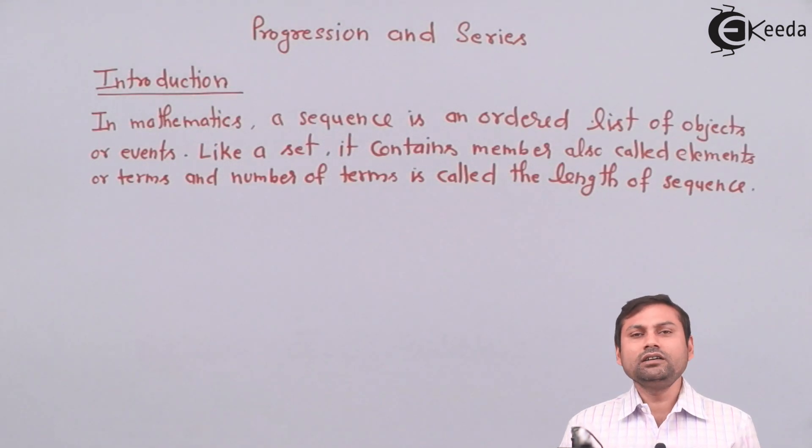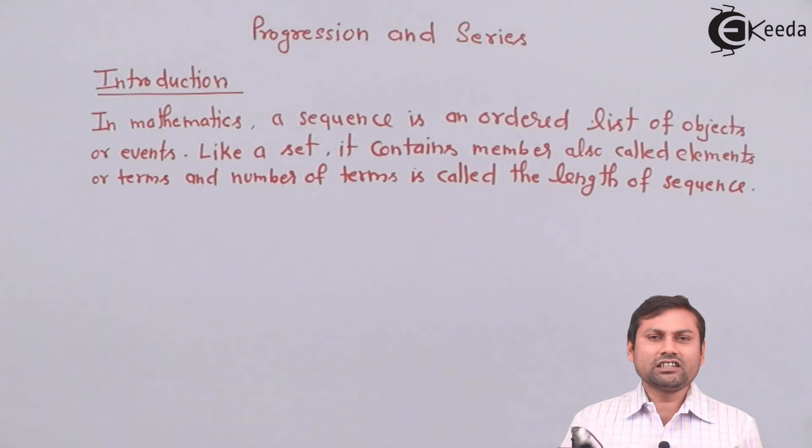Natural numbers are also one example of a sequence and there are infinite terms. So it could be infinite terms. When the sequence has finite terms, in that case we can define the length. This is the formal definition of a sequence.